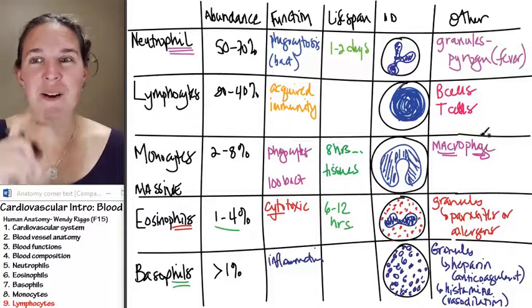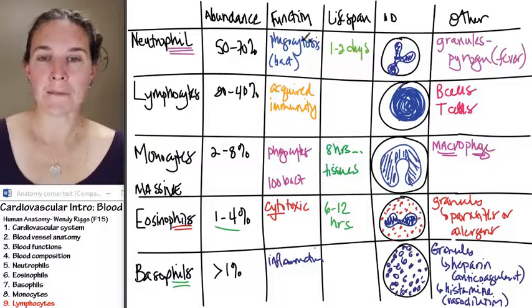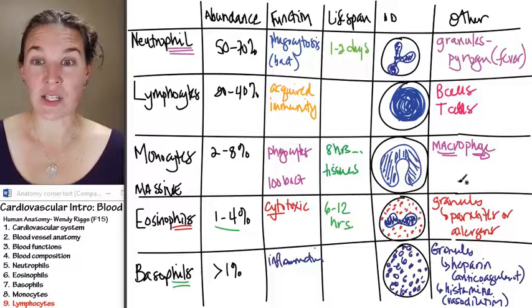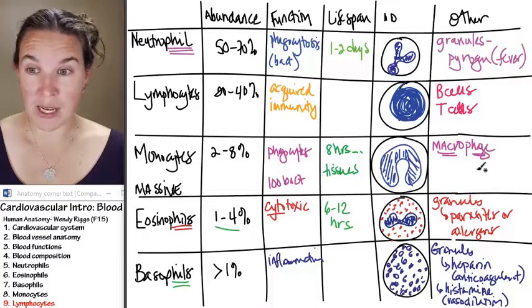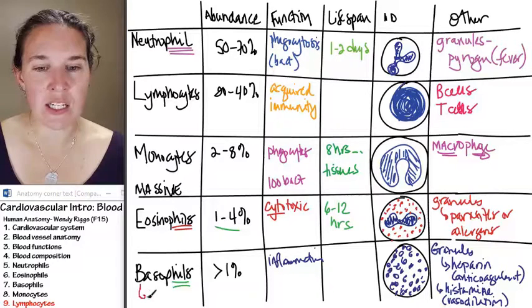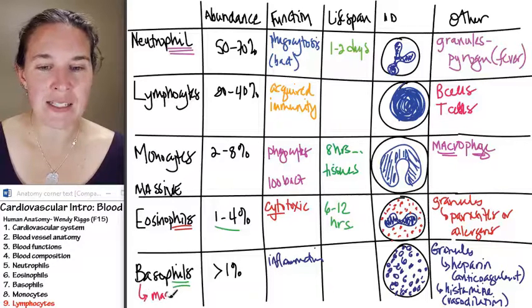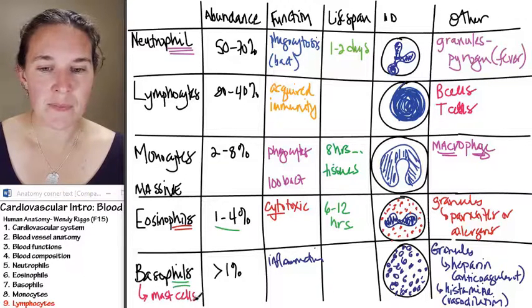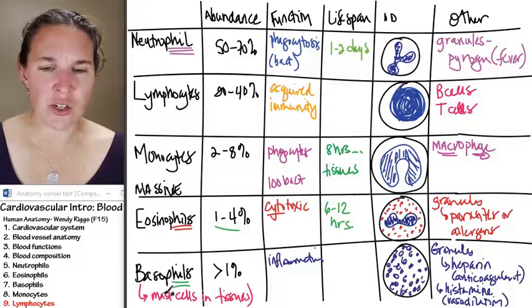There was something else I wanted to tell you about basophils. Everybody stays in the circulation except for monocytes, which become macrophages. And basophils actually migrate into the tissues as well, and they become mast cells. And I just want to make sure that we're cool with that.